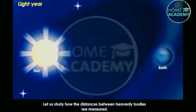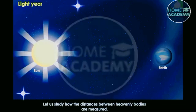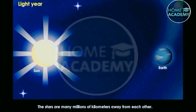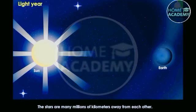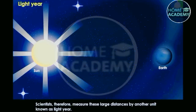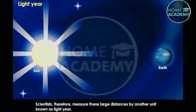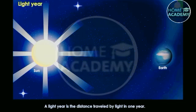Let us study how the distances between heavenly bodies are measured. The stars are many millions of kilometers away from each other. Scientists therefore measure these large distances by another unit known as a light year. A light year is the distance travelled by light in one year.